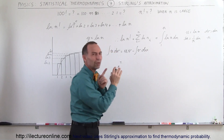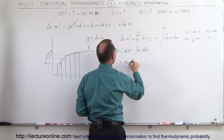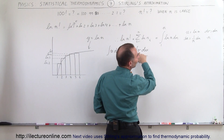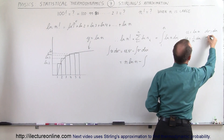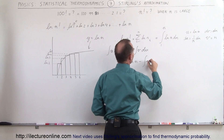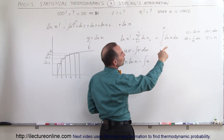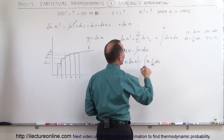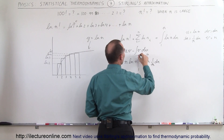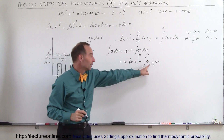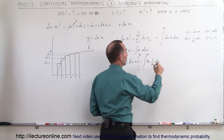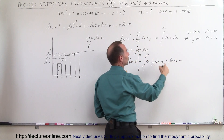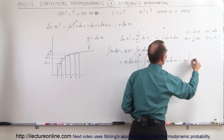We set u equal to the natural log of n, and dv equal to dn. That means du becomes 1 over n times dn, and v becomes n. Plugging that in, this becomes v times u — that is n times the natural log of n — minus the integral of v times du, which is n times (1 over n) dn. The n's cancel out, and we evaluate from 1 to n. So this becomes n times the natural log of n minus the integral of dn, which is simply n, all evaluated from 1 to n.